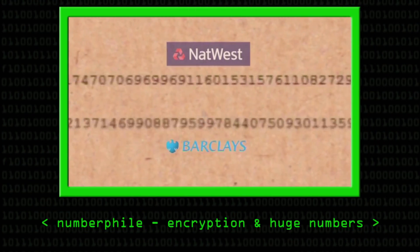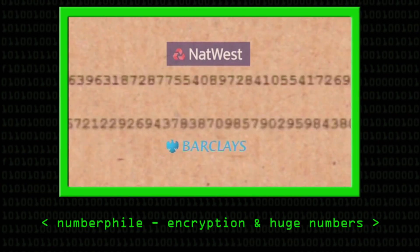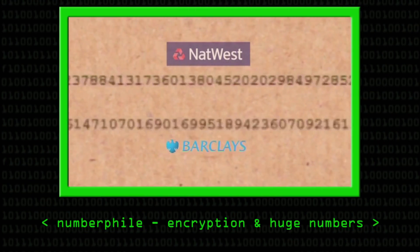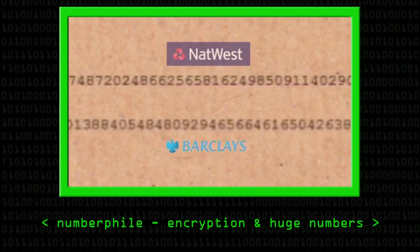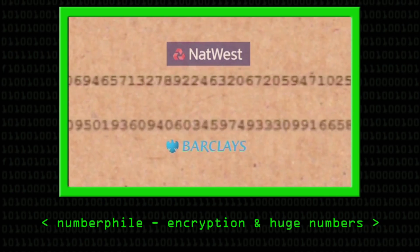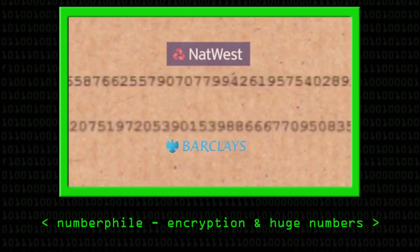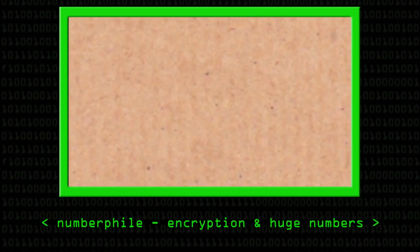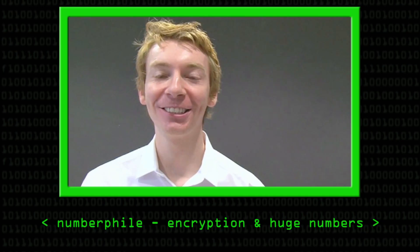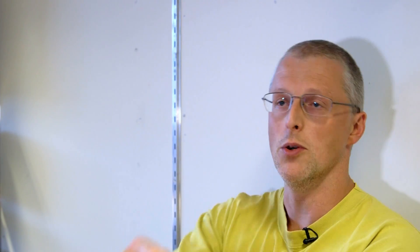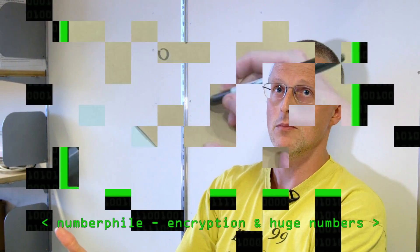All banks have similar numbers when you want to send them your credit card details. This is not a secret number — your computer will download this number when it wants to send your credit card details. You put your public key out there, other people encrypt messages and send them to you, and you're the only person with the private key, so you're the only person that can decrypt them.